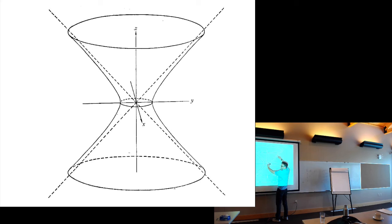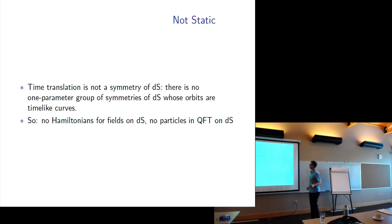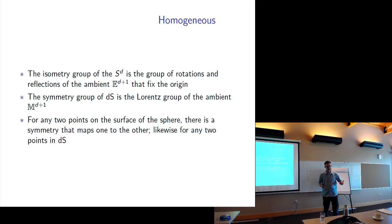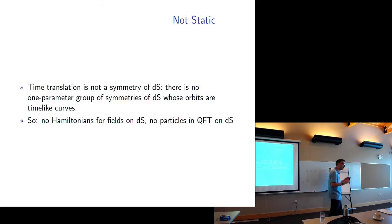So that looks weird. Say I give you this point and this point — first you rotate, which is obviously a symmetry, and then you do a Lorentz boost in the ambient space to get up there. Those are basically all the moves you have, and they're always enough. So it's homogeneous and the geometry looks exactly the same at each point. So you'd expect it should be static — that time evolution should just map one spatial geometry to another and it should always be the same one. But no, it's not static.